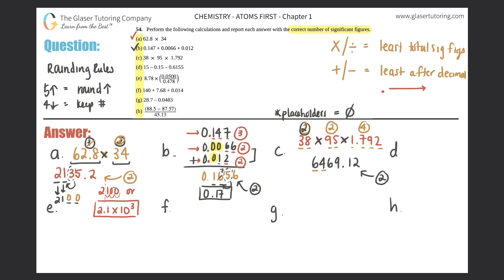The first two sig figs are 6 and 4. The next digit is 6, which is five or above, so round the 4 up to 5: giving 65. I need two placeholder zeros, but I can't keep the decimal or those zeros become significant. So it's 6500, or in scientific notation 6.5 times 10 to the third. That's the answer for c.